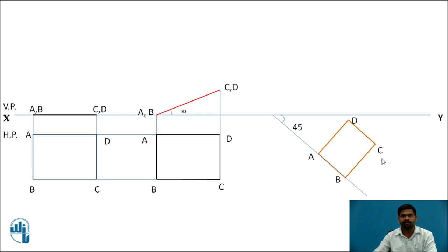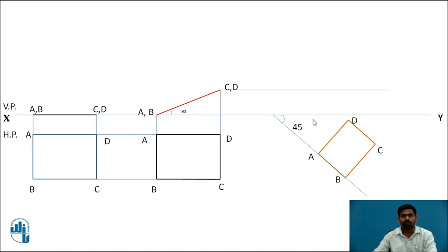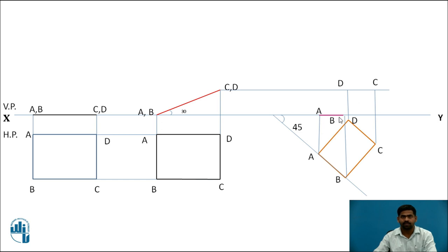Mark it as A, B, C and D. Now draw the projections to complete the front view for the third stage. Draw the projection from points C and D. A and B lie on the X axis. To obtain points A, B, C, D in the front view, draw the projection from point A — the intersection between this projection and the projection from A gives the first point. Similarly get points B, C and D. Now join AB, BC, CD and AD. This is the third stage for the problem.